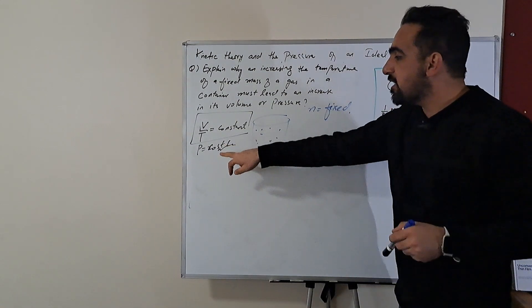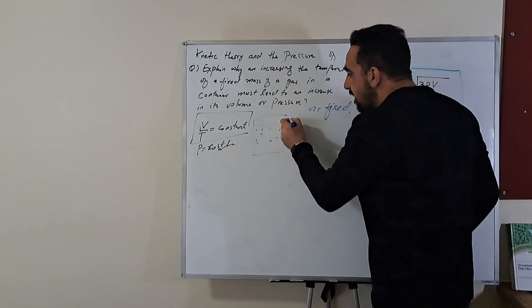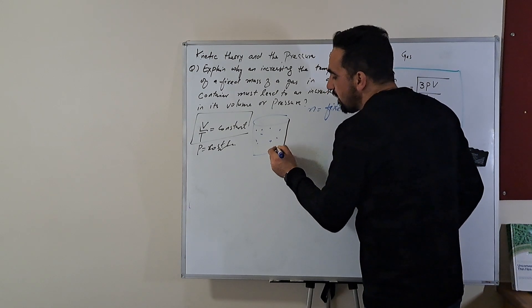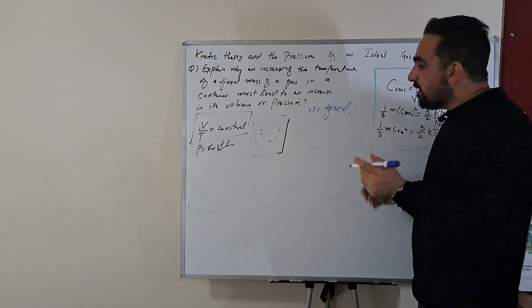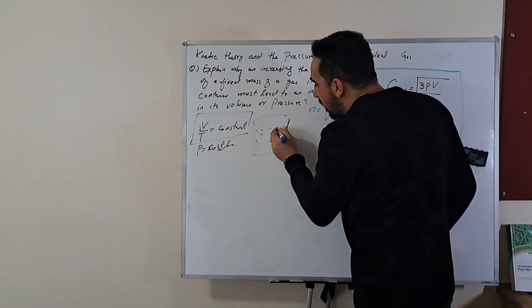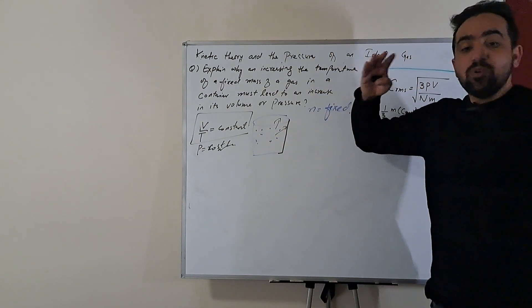Now if our container pressure is constant it means that these walls are flexible. These walls can move. So when they increase the pressure on the wall and on the piston, they move away.